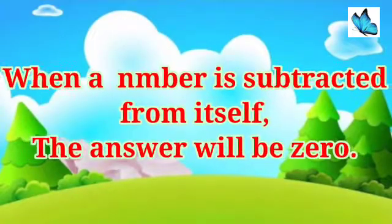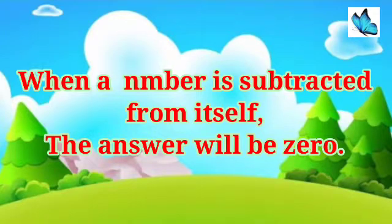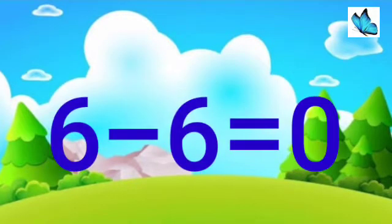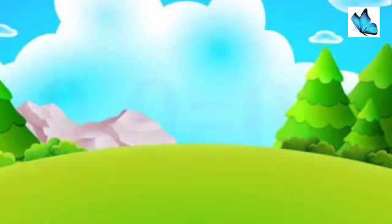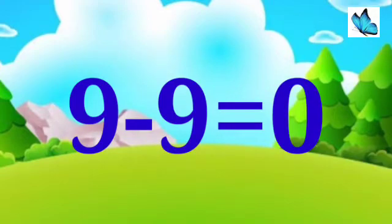When a number is subtracted from itself, the answer will be zero. For example, six minus six is equal to zero, four minus four is equal to zero, nine minus nine is equal to zero.